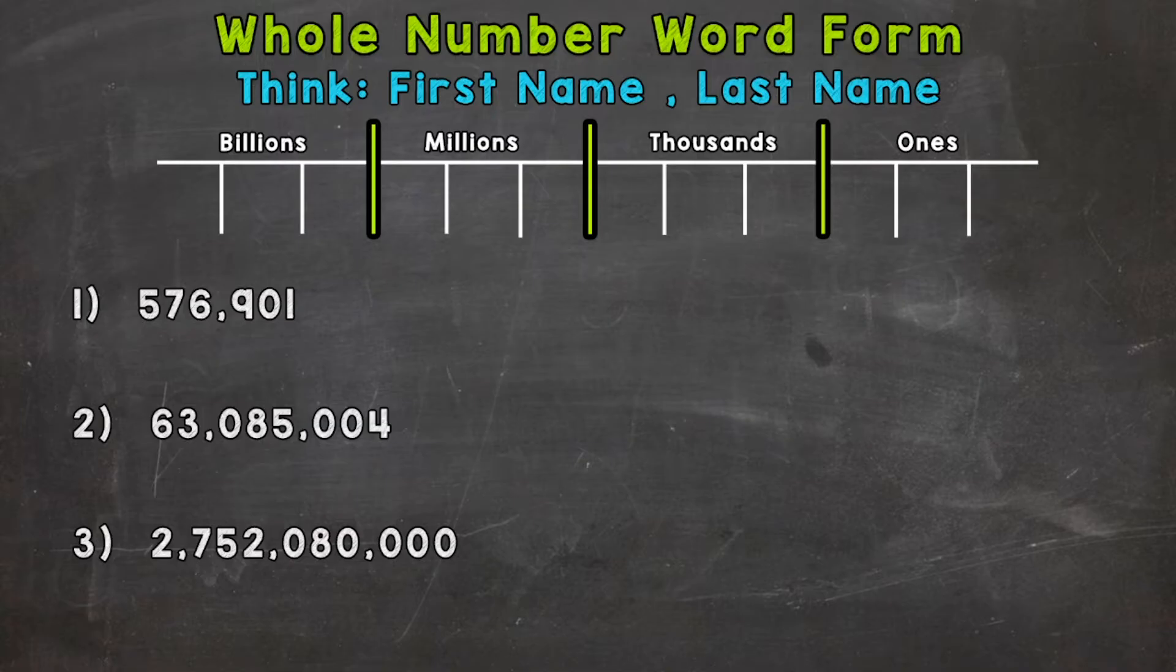Now when it comes to word form, we're going to write these numbers out in words, hence the name word form. So we need to think about how we would say these numbers and that's exactly what we write. So we have three examples that we're going to go through together in order to get this down.